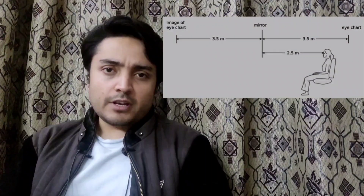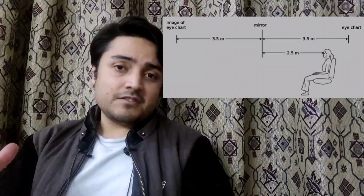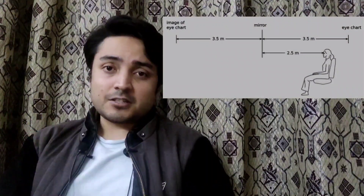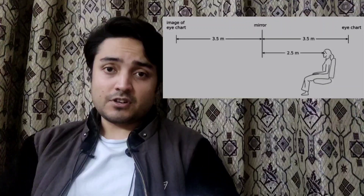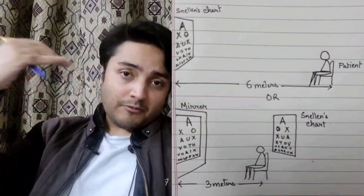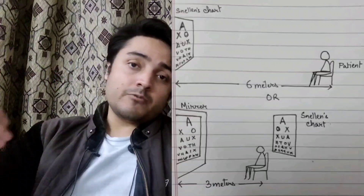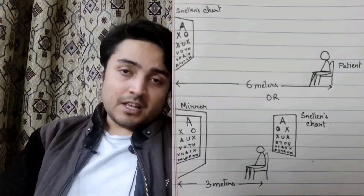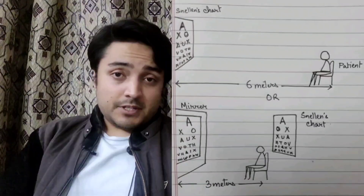When you walk into an eye clinic, you usually see a mirror in front of you. This is because when the clinic space is small and they cannot achieve the exact six meters required from the chart, they use a mirror. They position the individual three meters from the mirror, and with the mirror's reflection they achieve the remaining three meters, giving a total of six meters.